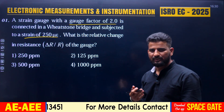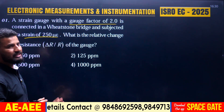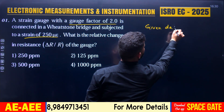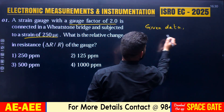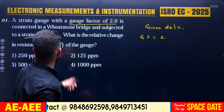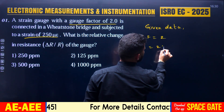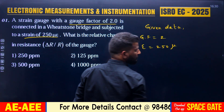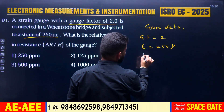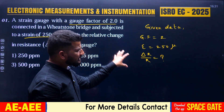Let us write down the given data with respect to the question. The first given value is the gauge factor: GF = 2. The other given value is the strain: epsilon = 250 microstrain. And we want to find the value of delta R by R, i.e., the relative change in resistance. What is the relation between these three parameters?